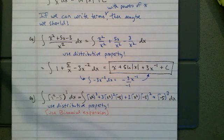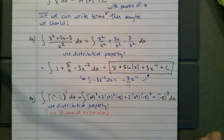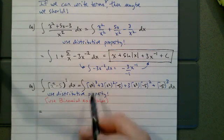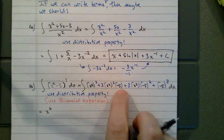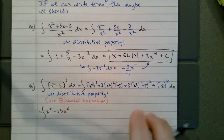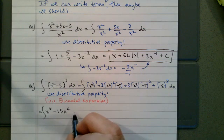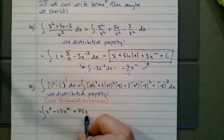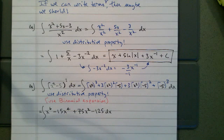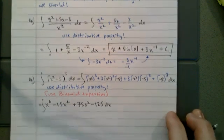I'm doing a binomial expansion — you could also break this out as x squared minus 5 multiplied three times and FOIL. I like the binomial expansion because algebra is awesome. So I get x to the sixth, minus 15x to the fourth, plus 75x squared, minus 125. This is still an integral. Now we can add one to the exponents and divide by the new exponents.